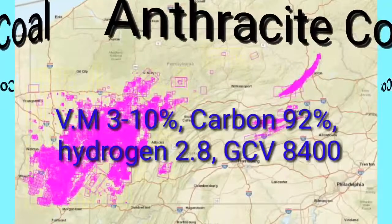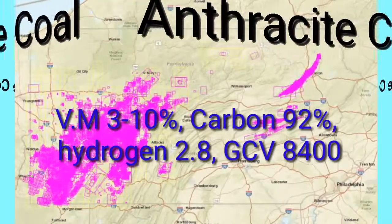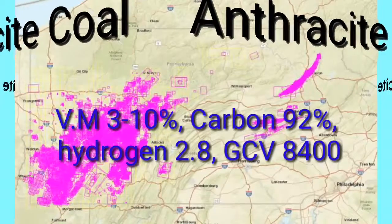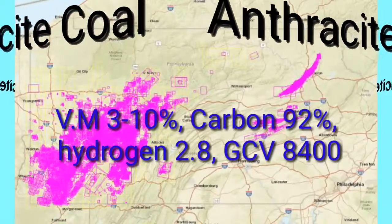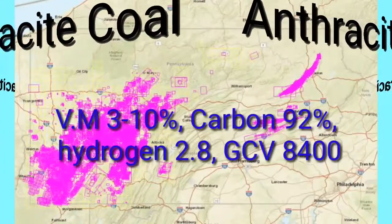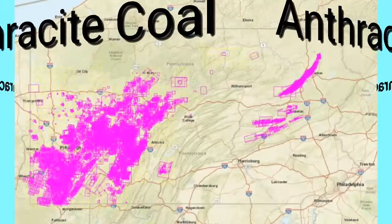Anthracite is found in Pennsylvania, in India, and in Pakistan.